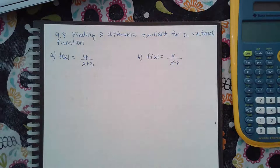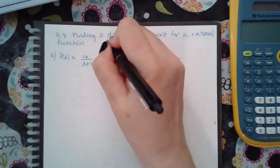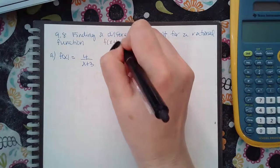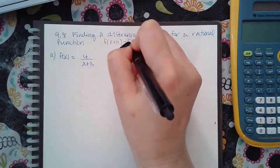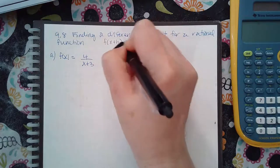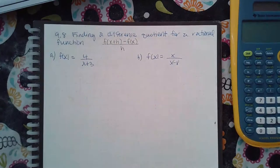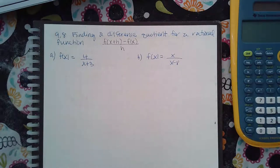Here we have 9.8, finding a difference quotient for a rational function. The difference quotient is this fraction here, and you're not done simplifying the fraction until you have canceled or reduced the h that is in the denominator.